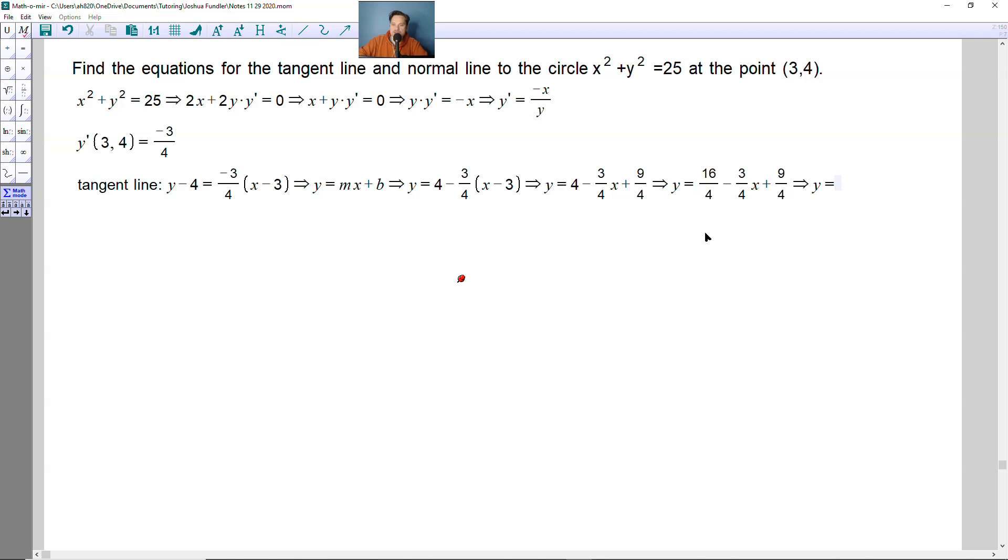So lastly, y would be equal to this. 16 fourths plus 9 fourths will give you 25 fourths, and then negative 3 fourths with the x gets copied directly.